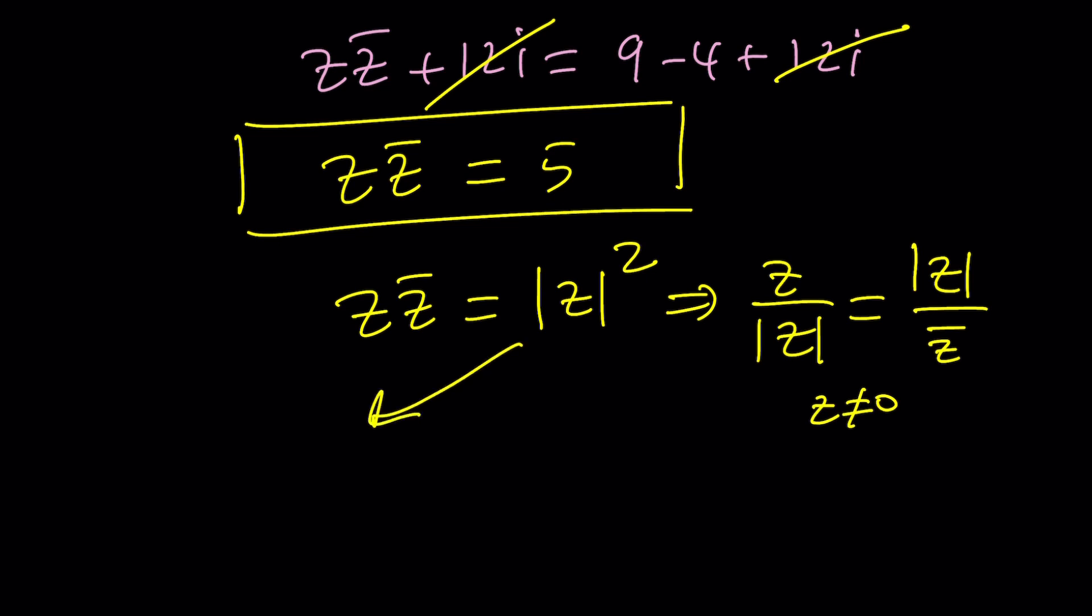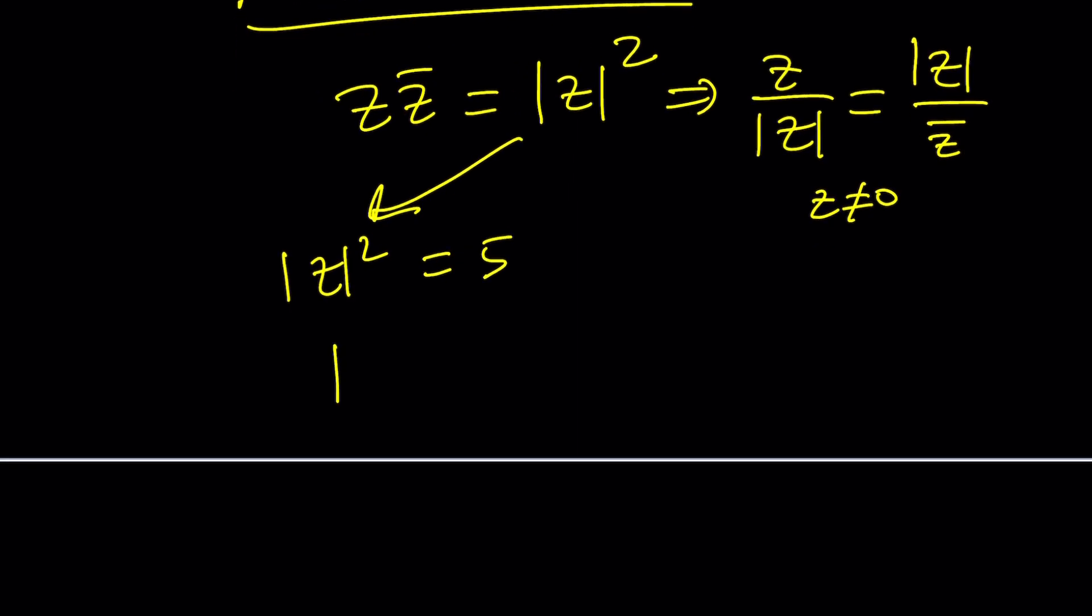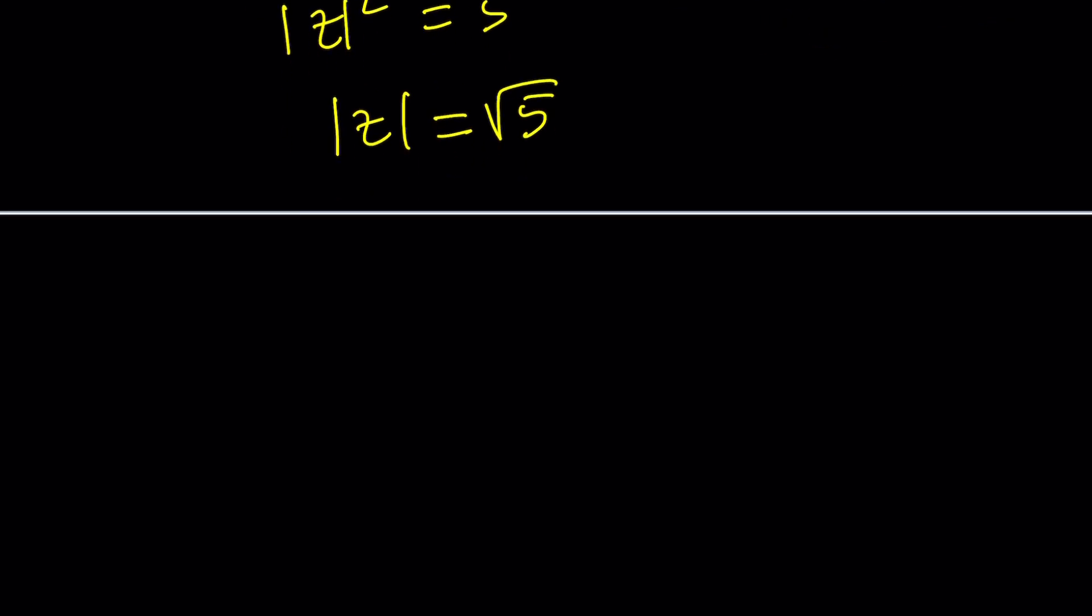This gives you absolute value of z squared equals 5. Since absolute value of z squared is 5, this means the absolute value of z is root 5 because absolute value cannot be negative even in the complex world. So there's only one solution to this equation and this basically represents numbers whose absolute values are square root of 5, always square root of 5 units away from zero, which means again the same circle.